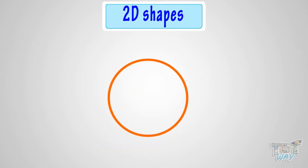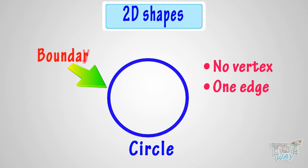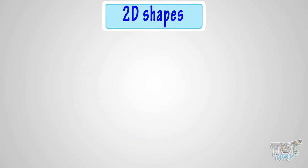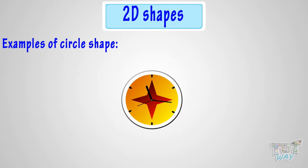This shape is called a circle. It has no vertex, and it just has a boundary which is its single edge. These are various things that are circle in shape.